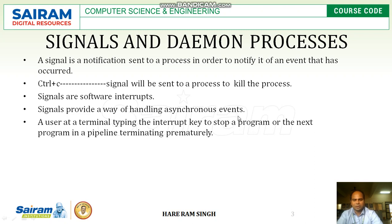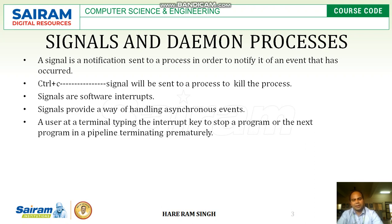Signals provide a way of handling asynchronous events. When many events or processes are running asynchronously, a signal will be used to synchronize those processes or events. A user at a terminal typing the interrupt key can stop a program, or a next program in a pipeline terminating prematurely — if a user presses the terminating key, it will send a notification or signal to kill that particular process or pipeline terminating prematurely.